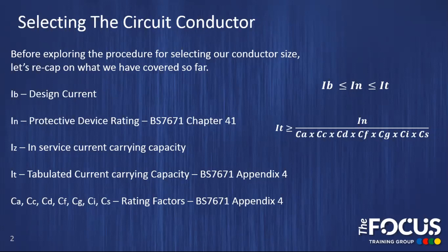We then looked at the two values, IZ and IT, and the difference between them. IZ being the in-service current carrying capacity, IT being the tabulated current carrying capacity from BS 7671 Appendix 4. We discovered that the IT values, or the tabulated values, already take into account cable type, reference method and a designated ambient temperature. If we then applied the specific rating factors for our given situation, we could calculate IZ. It would be worth reviewing that video, as we discovered that the method we're going to use today to select our circuit conductor size does not actually need us to know the value of IZ.